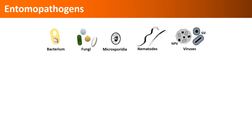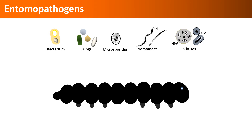Except for microsporidia, various commercial formulations based on other entomopathogens are available in the US. Each kind of entomopathogen has a unique mode of action and is ideal for one or more situations. Bacteria, microsporidia, and viruses need to be ingested by the host. While bacteria have a relatively broader host range, viruses are very specific to certain species.